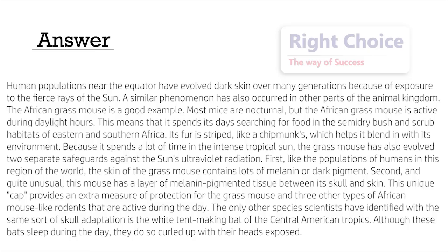Its fur is striped, like a chipmunk's, which helps it blend in with its environment. Because it spends a lot of time in the intense tropical sun, the grass mouse has also evolved two separate safeguards against the sun's ultraviolet radiation. First, like the populations of humans in this region of the world, the skin of the grass mouse contains lots of melanin, or dark pigment. Second, and quite unusually, this mouse has a layer of melanin-pigmented tissue between its skull and skin.